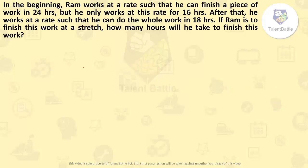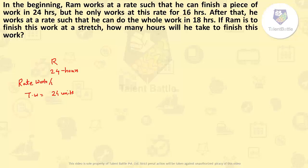Ram works at a rate such that he can finish a piece of work in 24 hours. Using the LCM method, I consider total work as 24 units. Time required is 24 hours, so rate is 1 unit per hour. In the LCM method we take the LCM of the time taken — here only Ram is working, so LCM of 24 is 24. Ram completes 1 unit per hour.